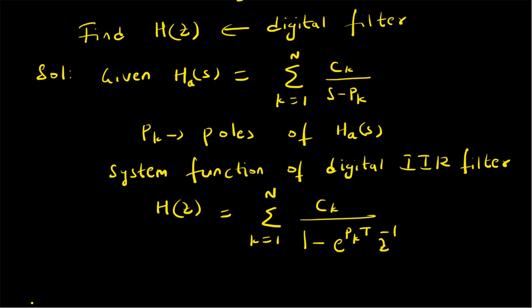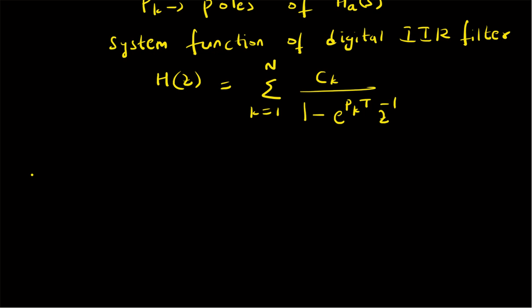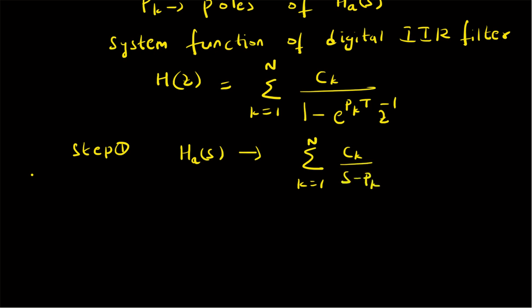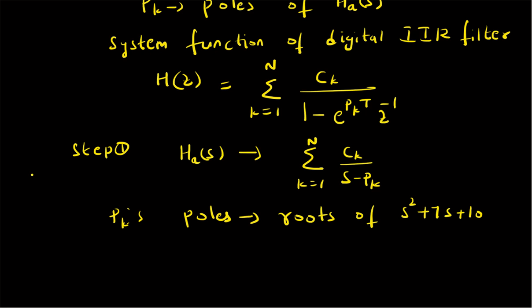Let us apply this algorithm to the given problem. Step 1 is to write H_a(s) in the required partial fraction form, that is as summation k=1 to N of c_k / (s - p_k). We need to find the values of p_k and c_k. The poles p_k are the roots of the denominator of H_a(s), which is s² + 7s + 10.